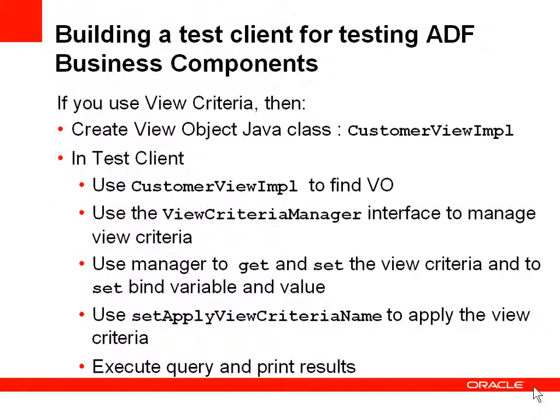If you're using a view criteria, you need to actually extend the view object Java class. Then, inside your test client, you're going to use that view object impl to find the VO. Once you've found the VO, you're going to use the view criteria manager interface to manage that view criteria — that's where you set the view criteria to use. If you have to set bind variables and values, you'll set that through the view criteria manager, and then use setApplyViewCriteriaName to include all of that.